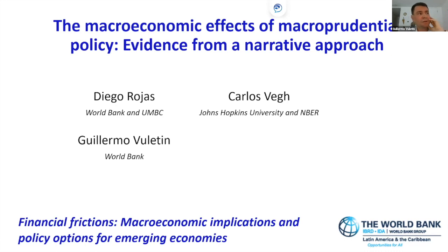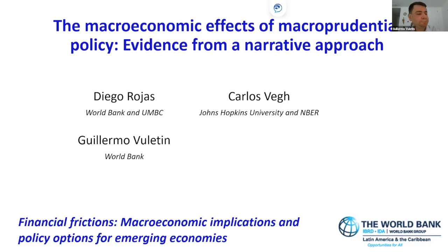As Pablo was saying, this is mostly going to be an empirical paper about the impact of macroprudential policy on the macroeconomy. A lot of what we've been discussing yesterday and today has been about mechanisms — capital controls, financial frictions, macroprudential policies. This paper is going to be mostly empirical and will try to make the case that it is very important in macroeconomics, especially on the empirical front, to measure things correctly and most importantly to identify shocks properly.